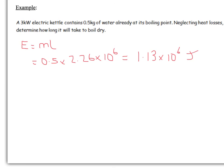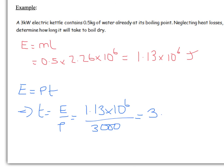So that's the total amount of energy. Again, using a similar equation to before, we know that energy is power times time. So time is energy divided by power. Let's take our energy divided by our power, that was 3,000 because it's 3 kilowatts, and that gives you 3.76 times 10 to the 2 seconds.